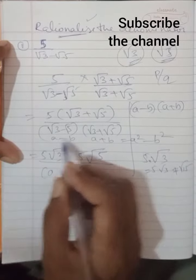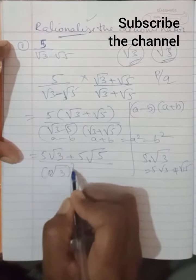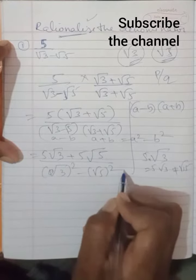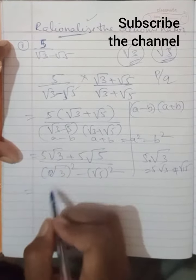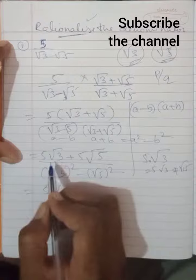Now this is in the form as I told you. You are going to get here a square, means root 3 square minus root 5 square. Look at this: 5 root 3, we cannot add these two. Once again be careful with this one. You are going to keep it as is only. These are unlike terms.